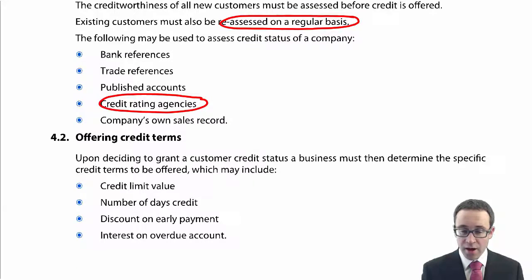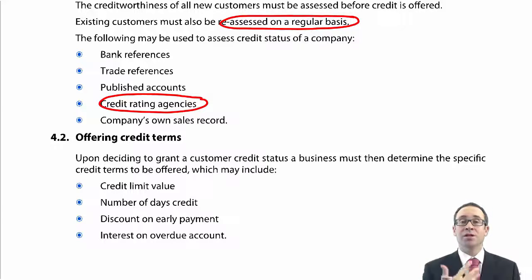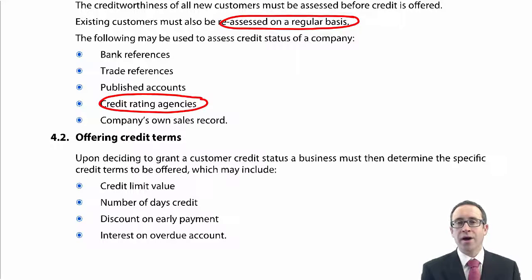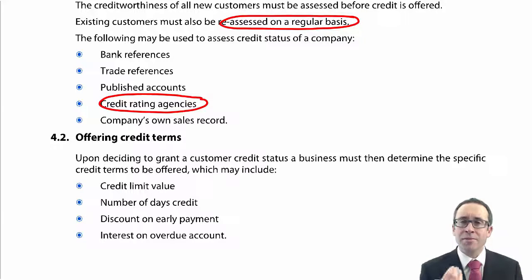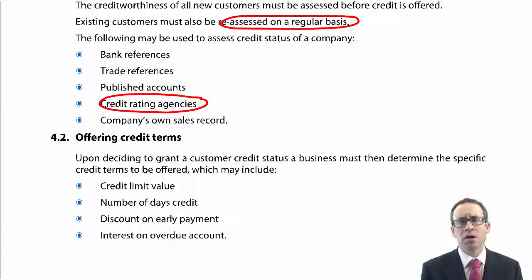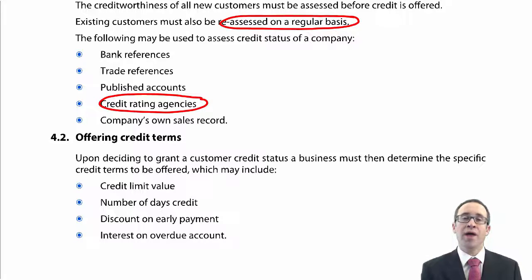In terms of credit terms, we look at the specific terms we offer. We look at the credit limit value — the maximum amount of credit sales we can offer — because we don't want to offer too much. The more we offer, the greater the risk of default and irrecoverable debts, thus reducing our profitability.